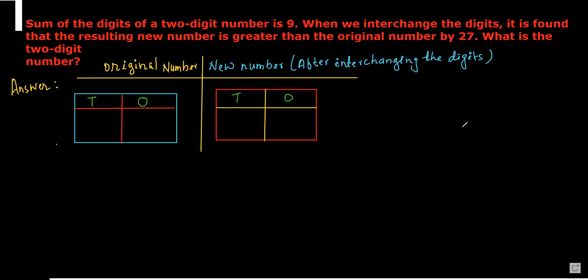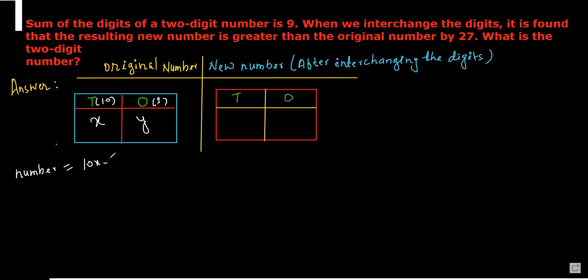It is given that the sum of the digits of a two-digit number is nine. Let the original number be xy, where x is the digit at the tens place and y is the digit at the ones place. So the original number is 10x plus y.